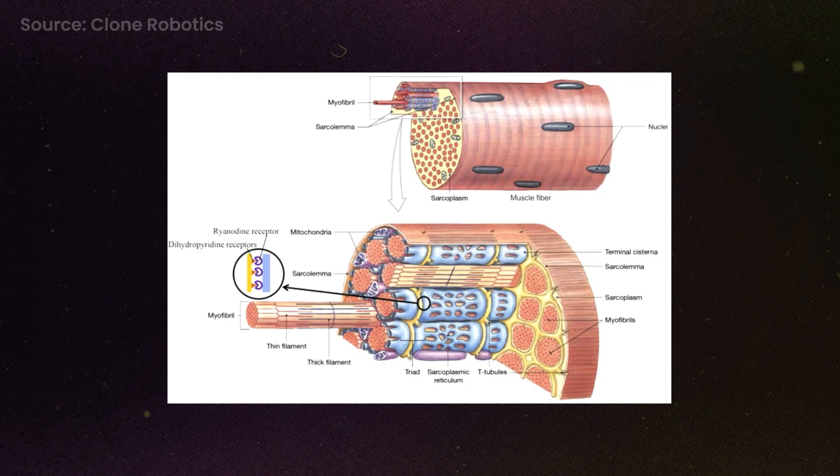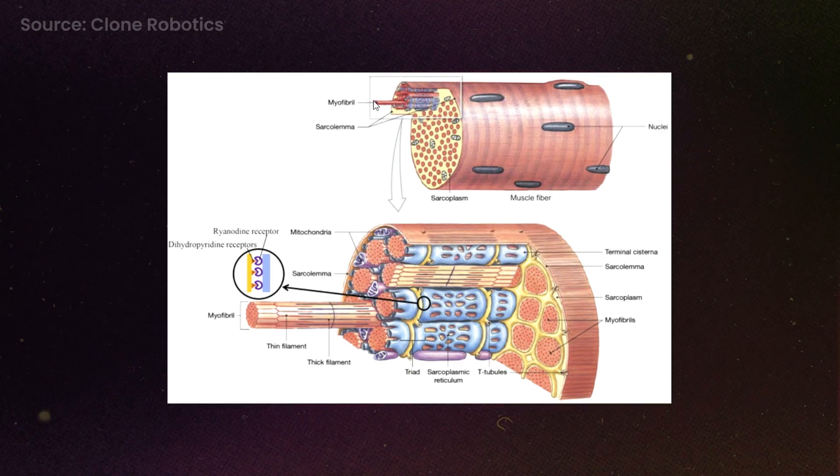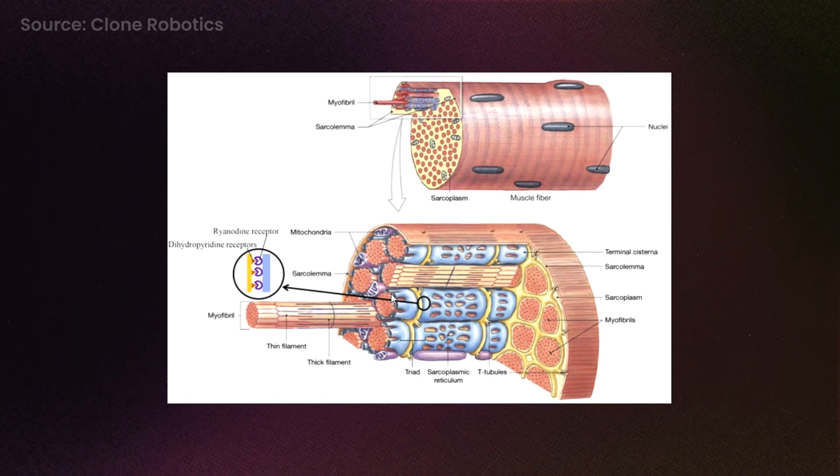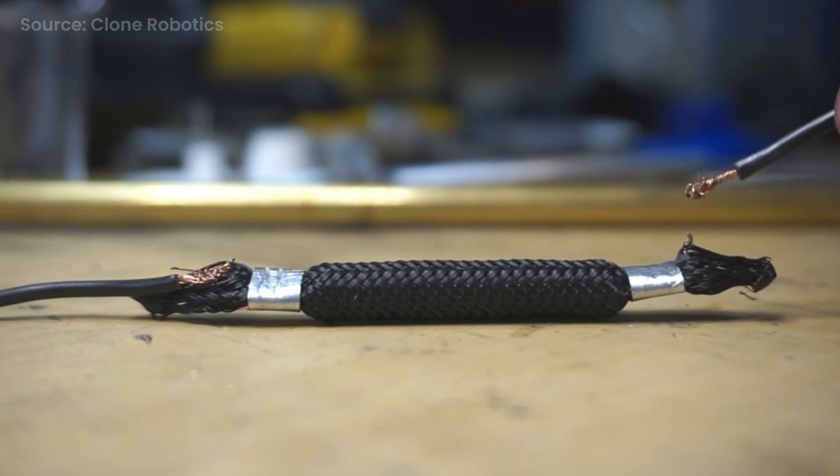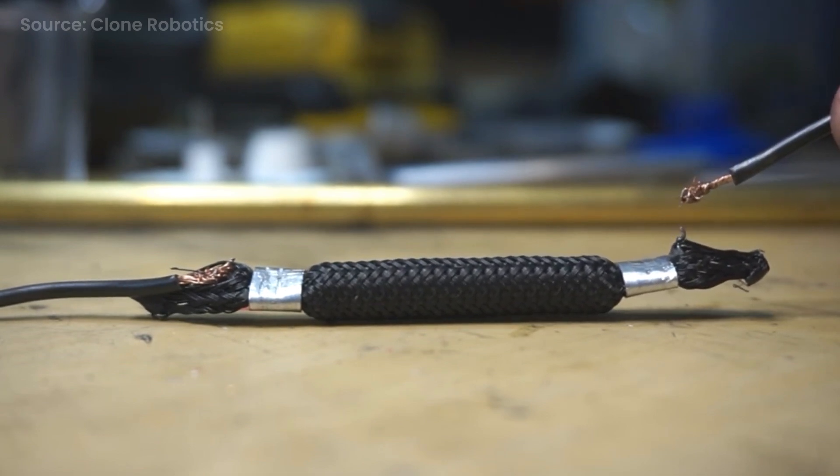Now without boring you too much with the details, our muscles are made up of muscle fibers, and those cells contain a bunch of these chains of myofibrils, which gives our muscles their fundamental property of contractility. And Clone has developed their own myofibre technology to mimic this.